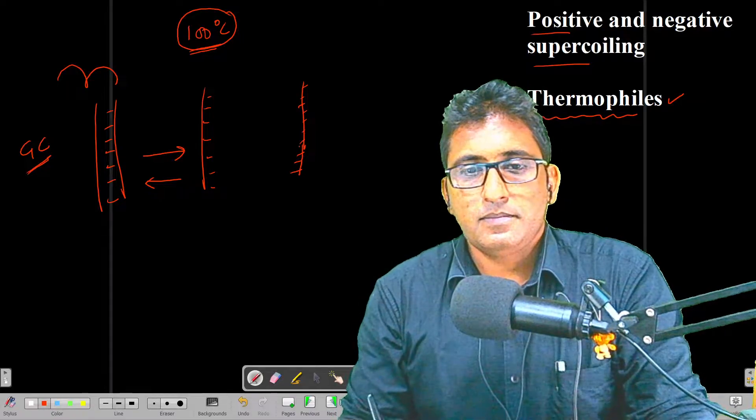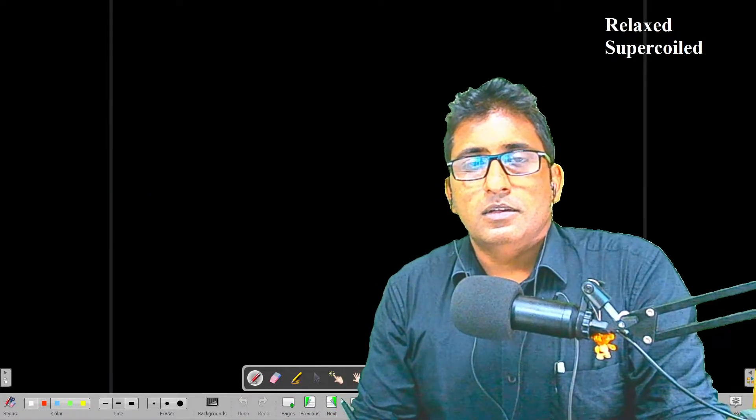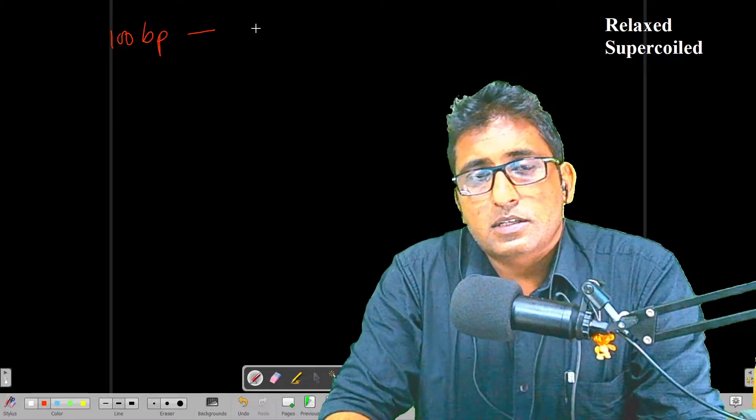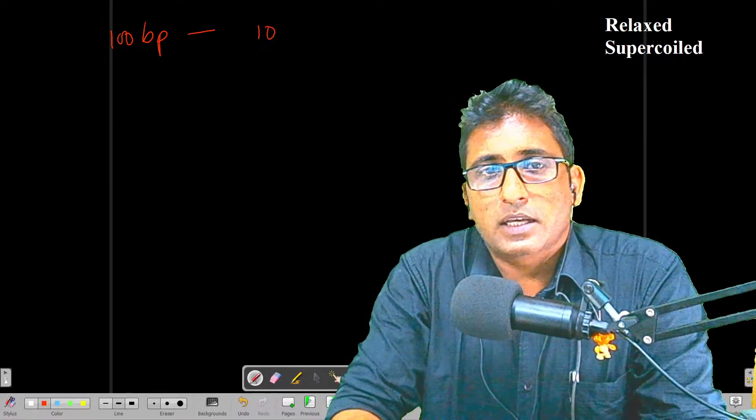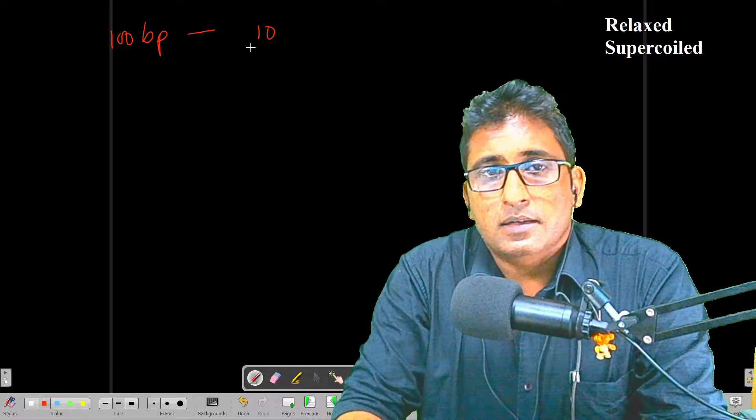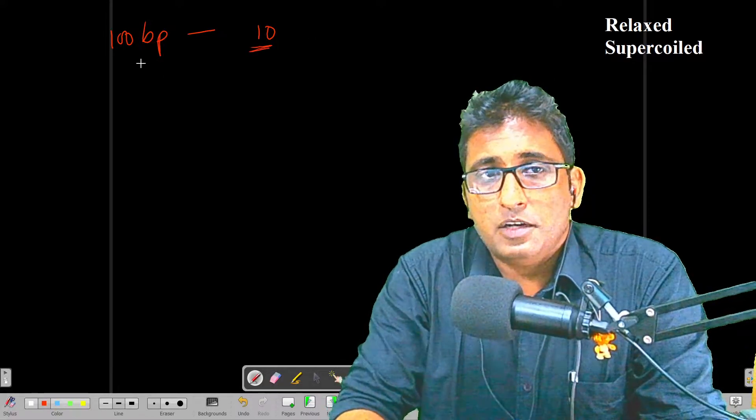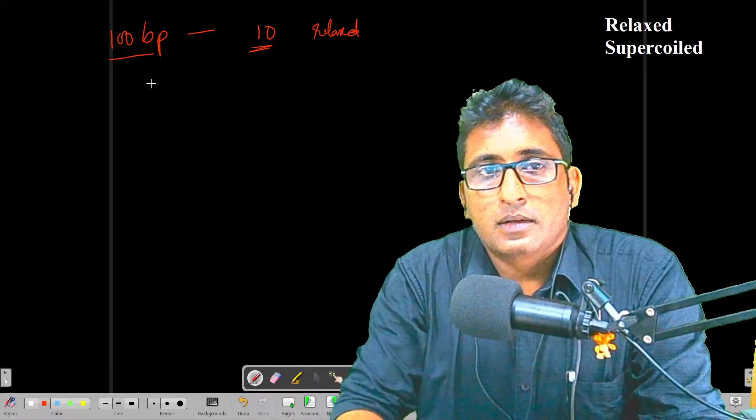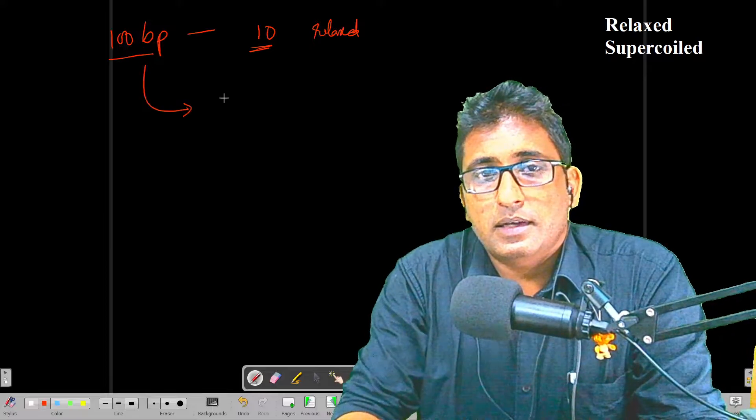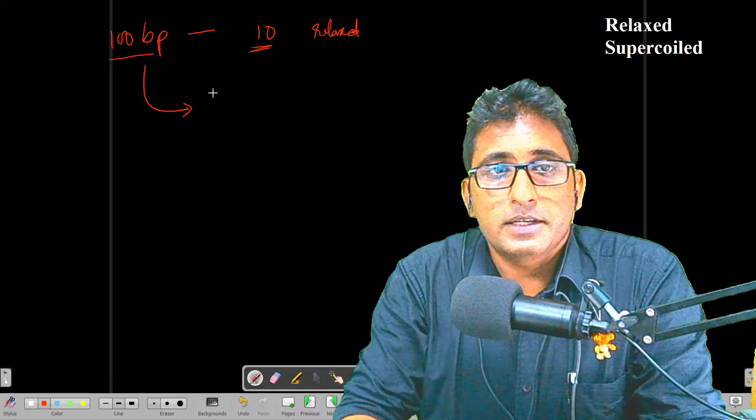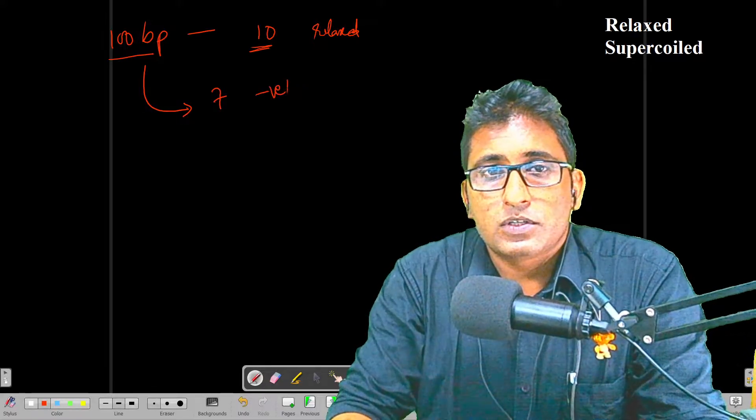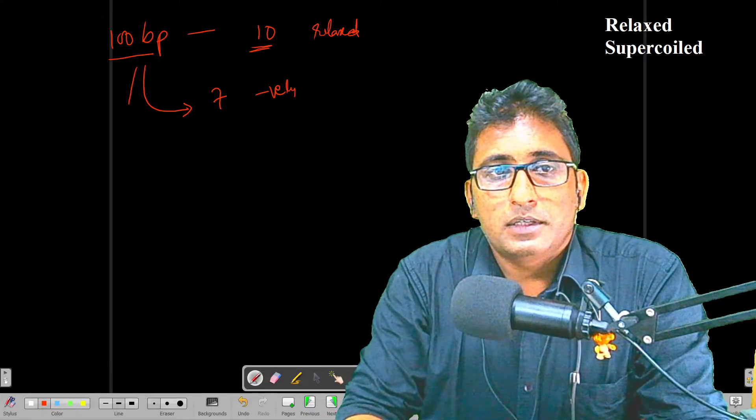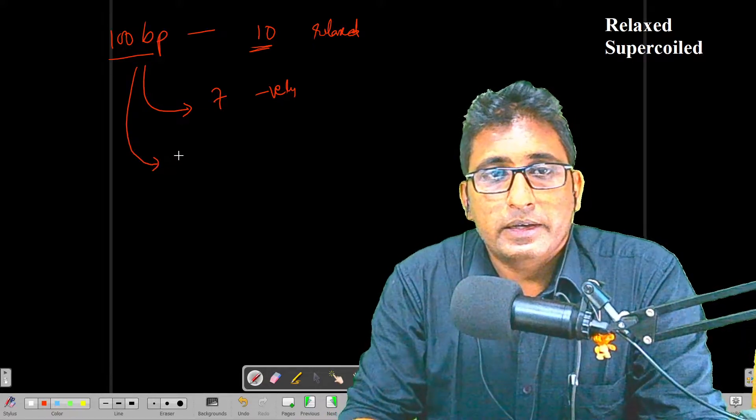As we discussed, 100 base pairs, the linking number or just twist should have been about 10. If it is 10, then 100 base pair DNA has twist of 10—we can call it as relaxed. If 100 base pairs has twist about say 7, then it is negatively supercoiled. If a similar DNA has about 12, then it is positively supercoiled. So that is how we denote this.